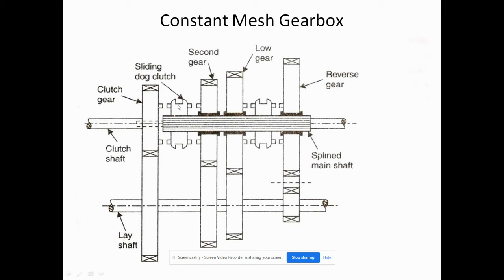By moving the dog clutches — there are two dog clutches here. If this dog clutch moves to one side, one gear will be produced. And if this dog clutch moves in this direction, another gear will be produced. Like this, by moving in either direction, different gears are produced.